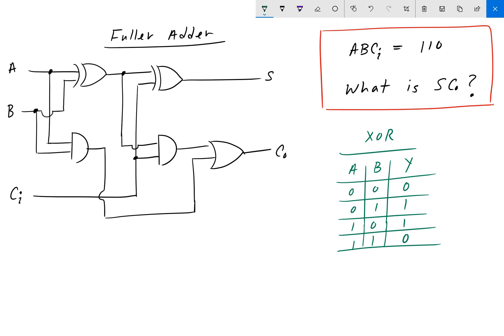So, now we can just plug in these values here. So, we have that A is 1, B is 1, and C_in is 0.